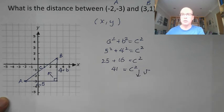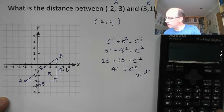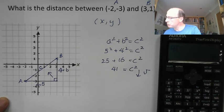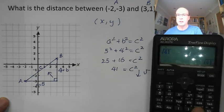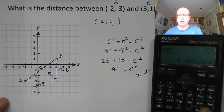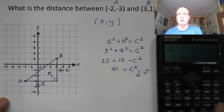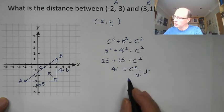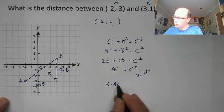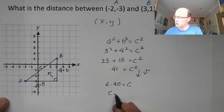Root 41 is definitely a job for the calculator. Square root of 41 is equal to, let's hit the FD, and we've got 6.40 to two decimal places. So 6.40 to two decimal places. So C is equal to 6.40.